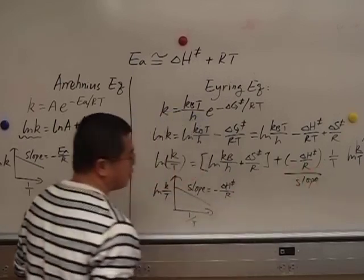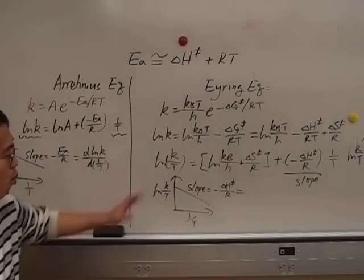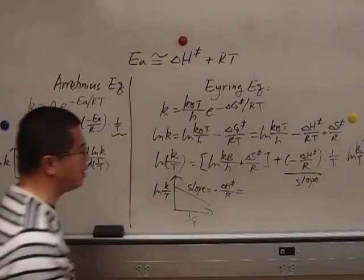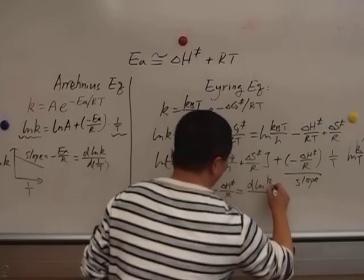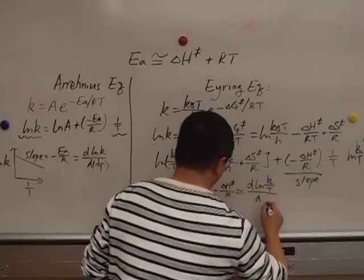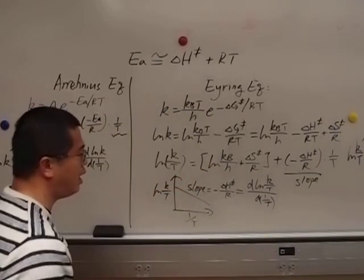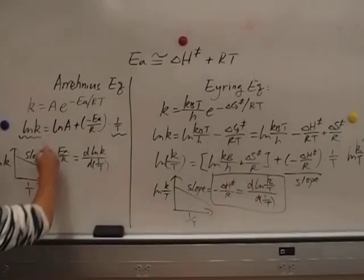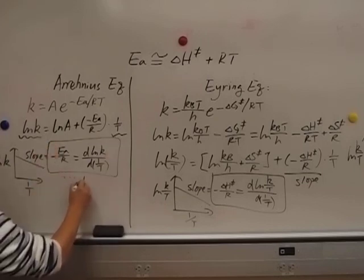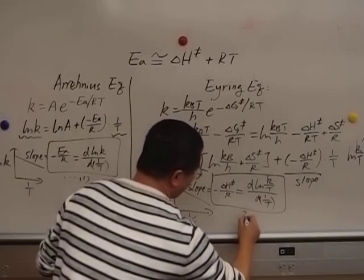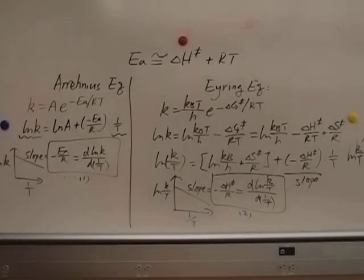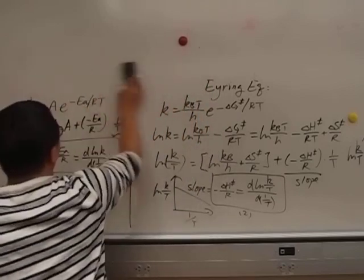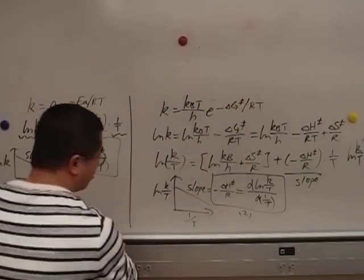Again you'll get a straight line and the slope is this. It's from here. And again if you have y versus x plot, the slope is dy over dx, and now we have a nice equation here and another equation here. Let's say this is equation 1. Let's say this is equation 2. So we're going to use equation 1 minus equation 2.